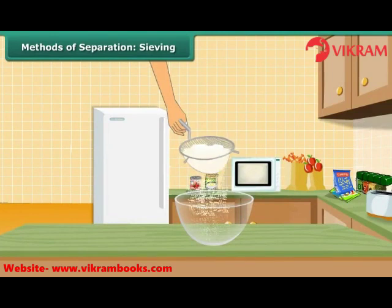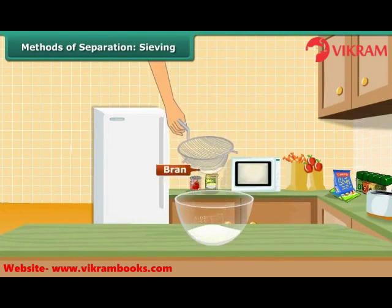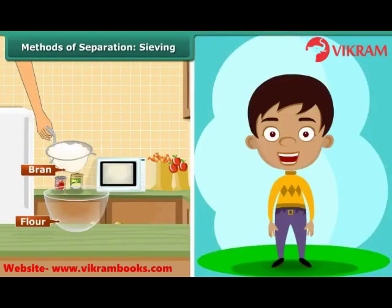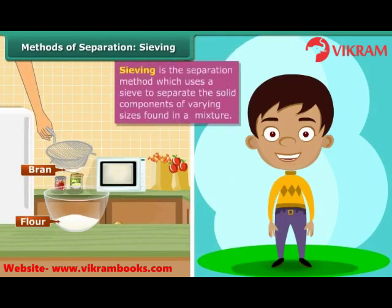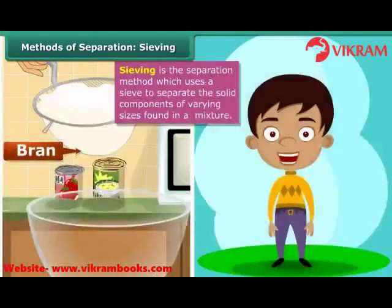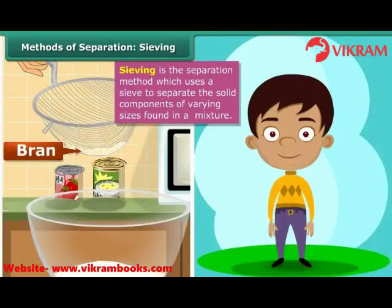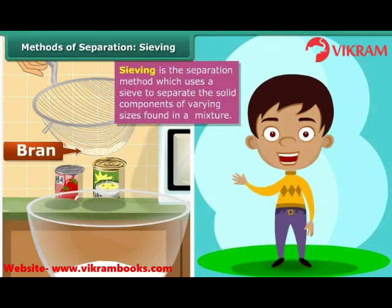Children, have you seen how your mother removes bran and other impurities from flour? They separate the coarse bran from the fine flour with the help of a sieve. This technique of using a sieve to separate the solid components of different sizes in a mixture is known as sieving. In this method, the mixture is placed on the sieve and shaken. Smaller particles pass through the holes of the sieve to the container placed below, and are thus separated from the bigger particles that are retained in the sieve.